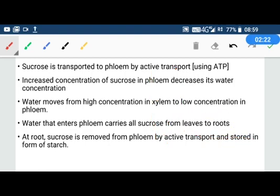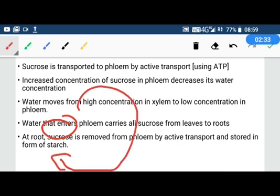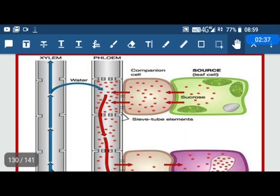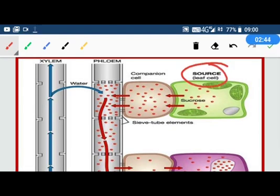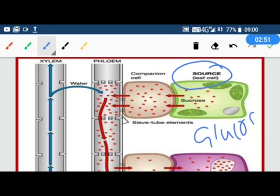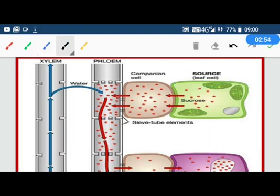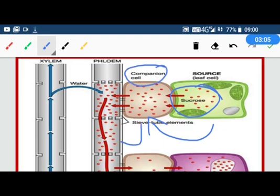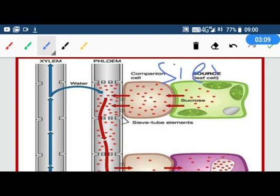This is the Munch hypothesis or translocation theory. The leaf is called the source, where photosynthesis produces glucose. This glucose is converted into sucrose, which transfers from the leaf to companion cells and then to sieve cells or sieve tubes. These sieve tubes are the phloem.